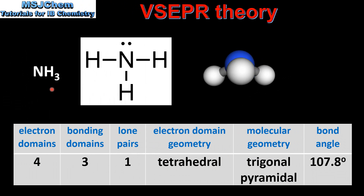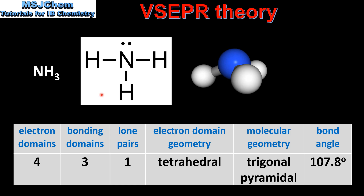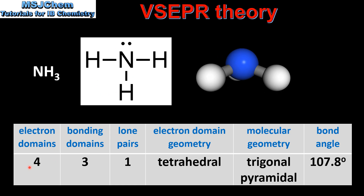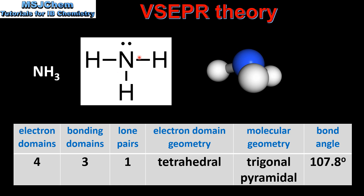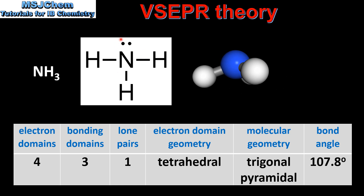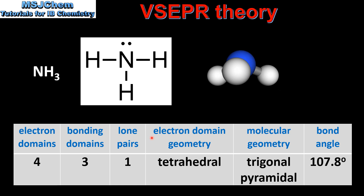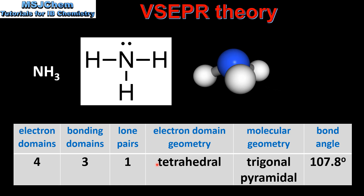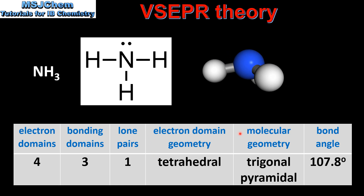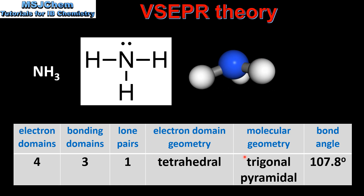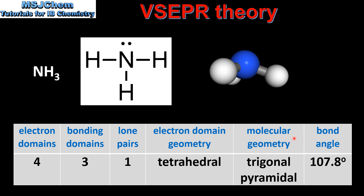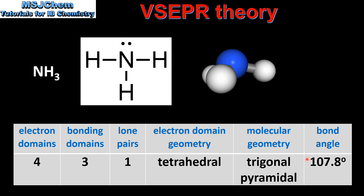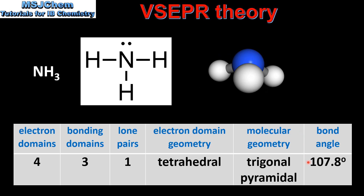Next we look at ammonia. Here we have the Lewis structure for ammonia. Ammonia has 4 electron domains with 3 bonding domains and 1 lone pair of electrons. The electron domain geometry is tetrahedral, the molecular geometry is bent, and the bond angle is 109.5 degrees.